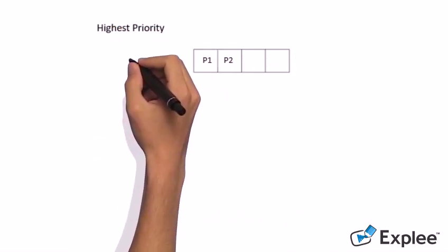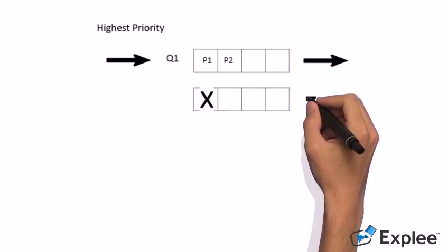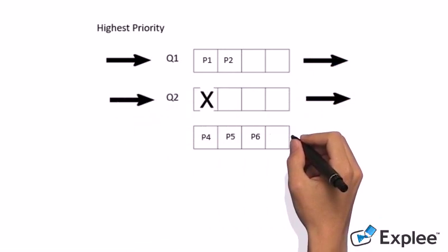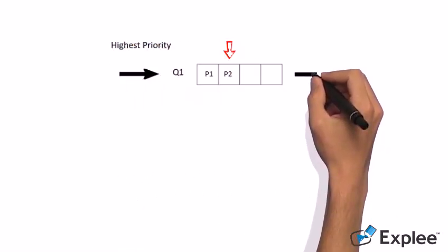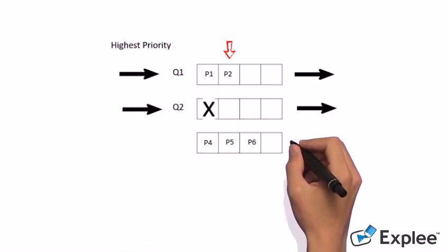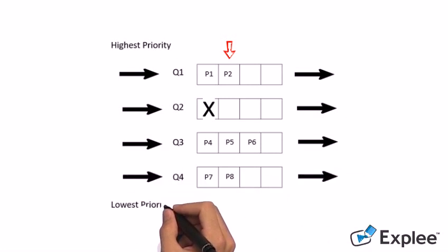If suddenly P3 queue is not available anymore, the processes cannot change their queues and their places during their lifetimes. But the other queues will still work, so P2 will work after P1 work finishes.